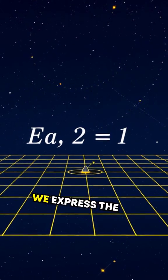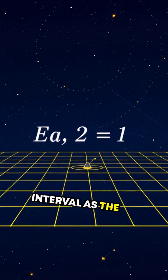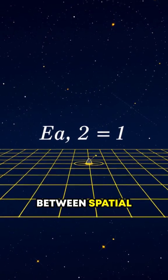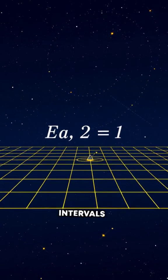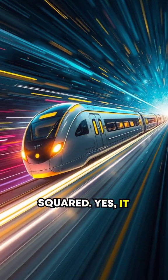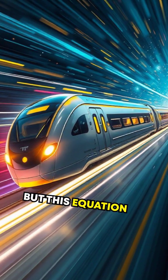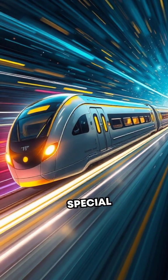Mathematically, we express the spacetime interval as the square root of the difference between spatial distances squared and time intervals squared. Yes, it sounds simple, but this equation proves essential for understanding special relativity.